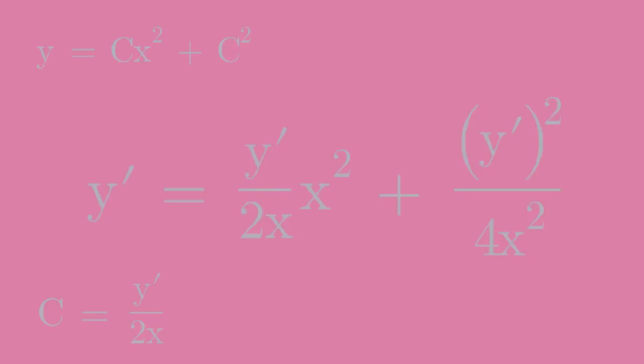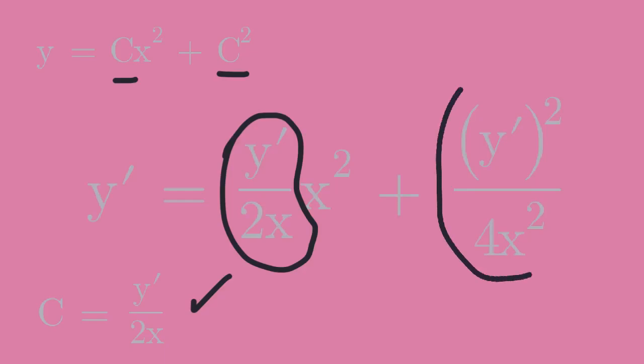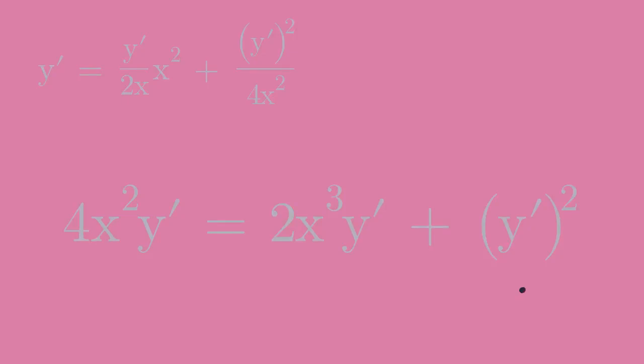This is the new equation in which the arbitrary constant C is replaced by y prime over 2x. The coefficient of x squared is the C and this term is the C squared. This is the differential equation to which